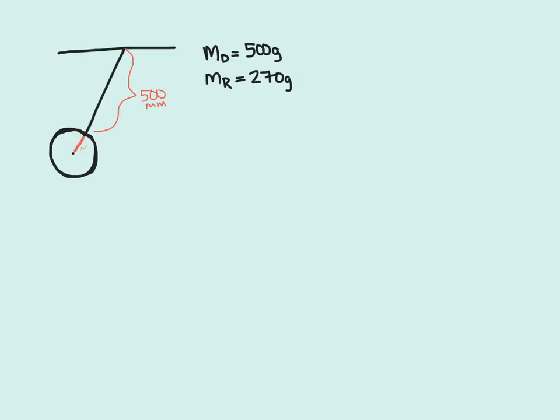For this problem, we have a pendulum that consists of a disc with a radius of 10 centimeters and a mass of 500 grams attached to a uniform rod with a length of 500 millimeters and a mass of 270 grams. The first thing we are trying to find is the rotational inertia of the pendulum about the pivot point. There are three different moments of inertia that we are going to have to calculate in order to find the total inertia.